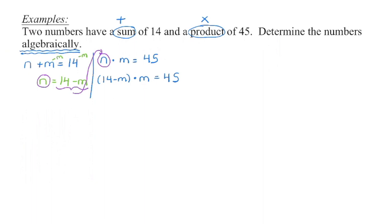Now we're back to what we did previously. In order to get rid of those brackets, I'm going to distribute — I'm going to multiply that m into the brackets. When I do that, I'm going to have 14m minus m squared equals 45. And take a look at this: as soon as we have a degree two equation, we know that is a quadratic.